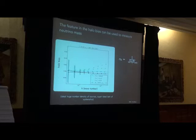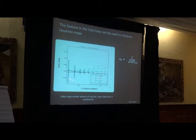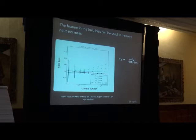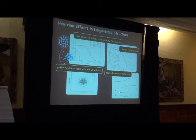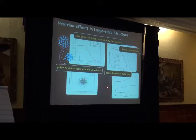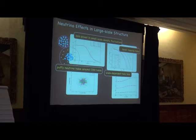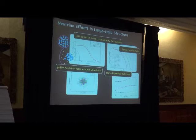In principle the scale-dependent bias from neutrinos can be distinguished from that due to non-Gaussianity. The non-Gaussian bias for the classic local-type has a very distinct shape — going like 1/k² at large scales because it's a bias in front of the gravitational potential and Poisson's equation gives a k² factor — whereas the neutrino-induced bias is more like a step function: one constant value at scales smaller than the free-streaming scale and another at larger scales. In practice constraining both simultaneously would be challenging.